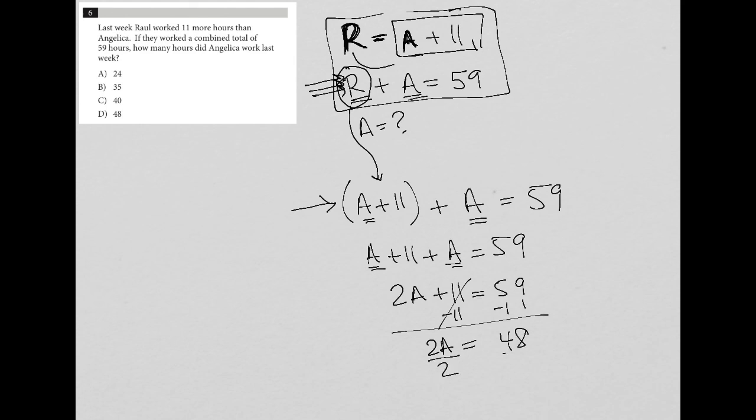And I can divide both sides by 2, and I'm left with A, or Angelica, worked 24 hours. And therefore, the final answer here is choice A.